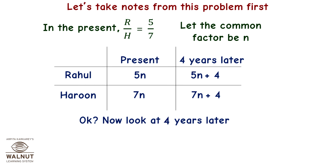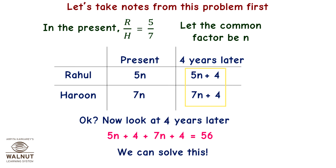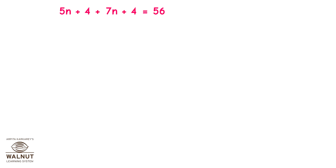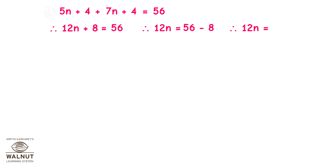Now look at 4 years later: 5n plus 4 plus 7n plus 4 equals 56. Solving this, we get 12n plus 8 equals 56. Therefore 12n equals 48, and therefore n equals 4.